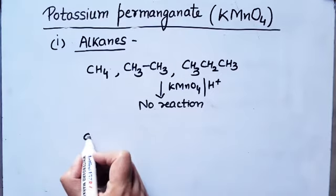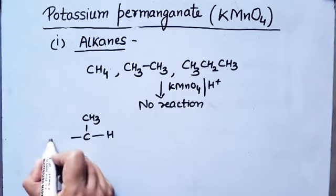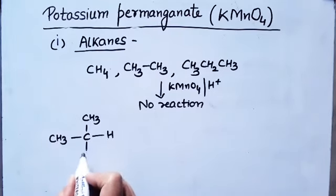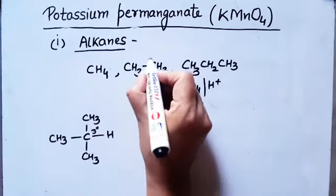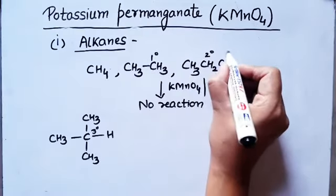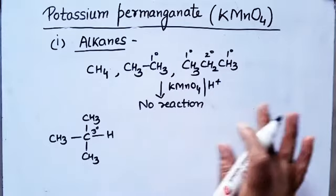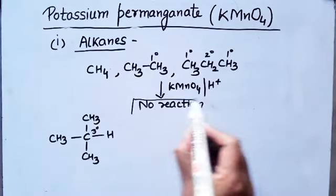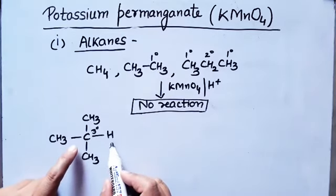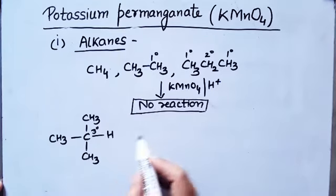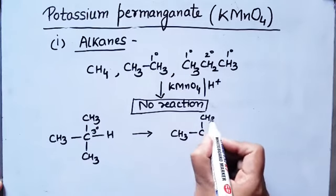But in alkanes where the hydrogen is tertiary — that is, attached to a carbon atom that is tertiary in nature — KMnO₄ does have an action. For primary and secondary hydrogens, there is no reaction. But when hydrogen is attached to a tertiary carbon atom in an alkane, that hydrogen atom will change to an OH group.